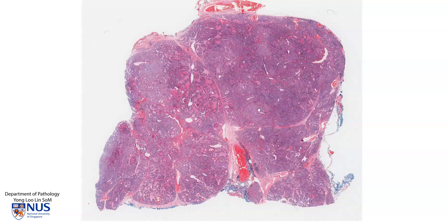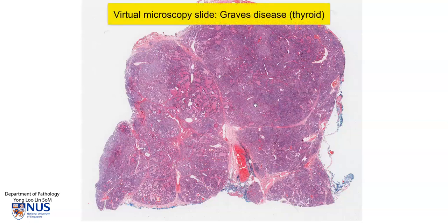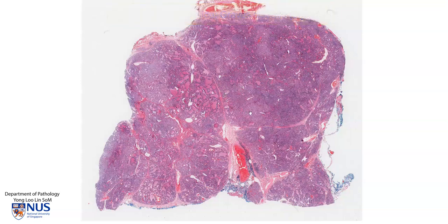This is a virtual microscopy slide of a case of Graves' disease in the thyroid gland. At low magnification, we can see that there are some different looking areas. In some areas, the cells appear quite blue, and in other areas, there is a bit more pink.